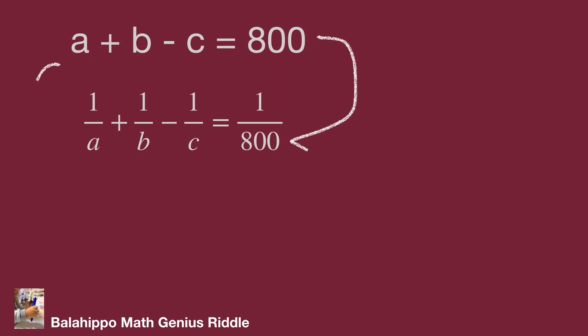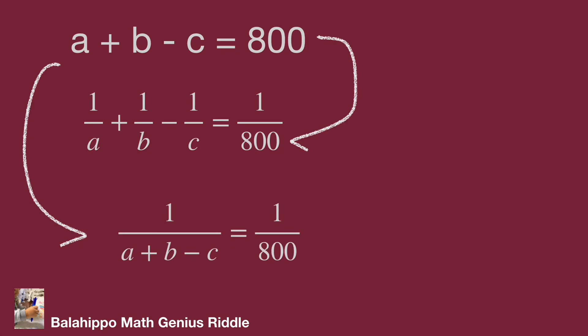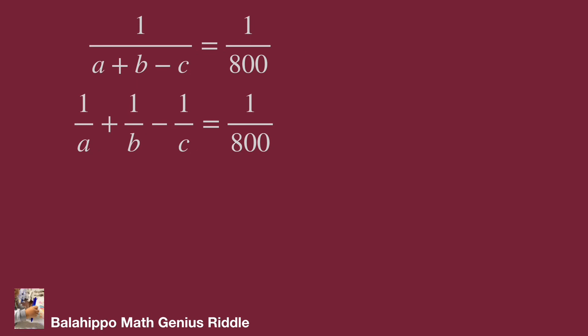I take the equation a plus b minus c equal to 800 and form its reciprocal, giving a new equation: 1 over (a plus b minus c) equal to 1 over 800. Comparing to the second equation, 1 over a plus 1 over b minus 1 over c is also equal to 1 over 800. So the new information is: 1 over a plus 1 over b minus 1 over c equals 1 over (a plus b minus c).